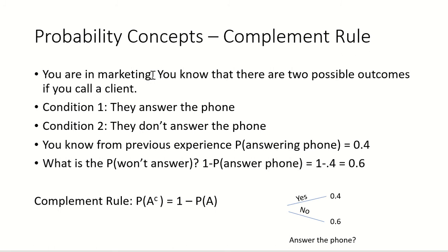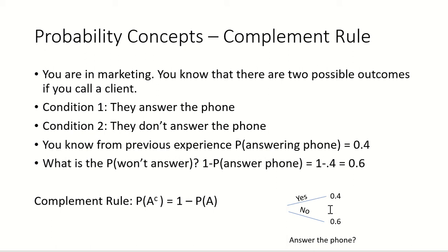The first probability concept that comes in is the complement rule. The complement rule says that if I know all of the outcomes and I know from previous statistics that the probability of them answering the phone is 40%, then the complement to that is they won't answer the phone, which is 60%. So the complement rule says if I know all of the different outcomes — that's 100% — and 40% are going to answer, then 60% of the time they won't answer.